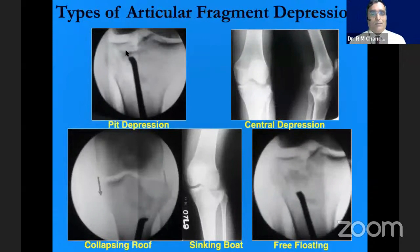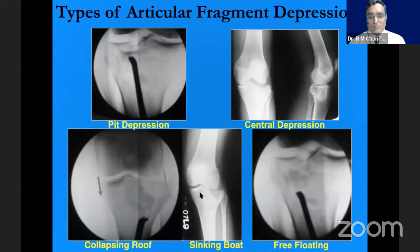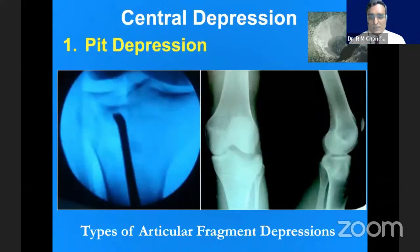This is a pit depression sort. This is a central complete depression. This is like a collapsing roof — the whole roof of this condyle has collapsed, but the outer margin is intact. Then we may have a sinking boat appearance where this part has collapsed and this part rises up into the joint, having lost its attachment. Then a free-floating fragment, which could be either topsy-turvy.